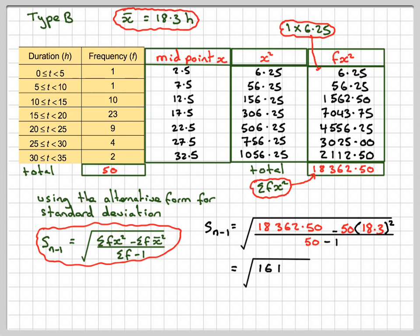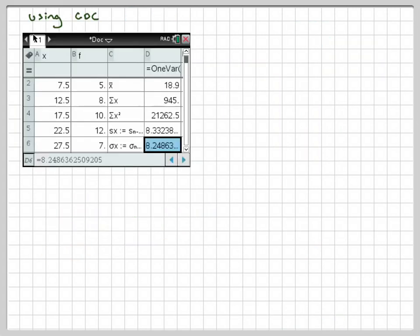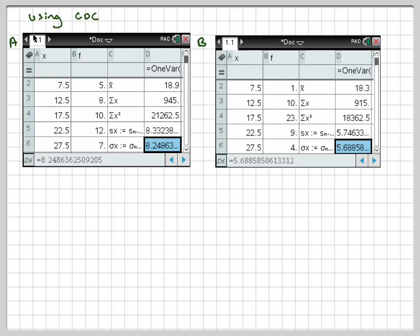Using the GDC: if you use the GDC, you have to put in the midpoints in A and then the frequencies, and then do one variable stats and you'll get all that information. x̄ we can see it's the same as we got when we calculated it. You can get the numbers here: 945 divided by 50, which is 18.9.